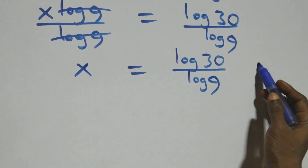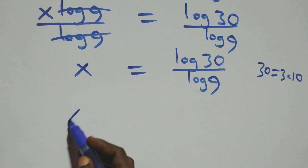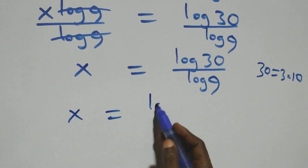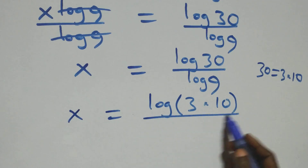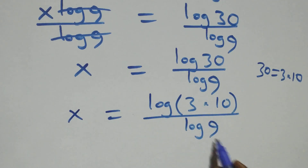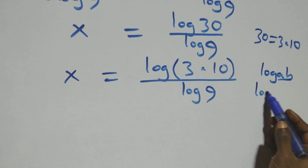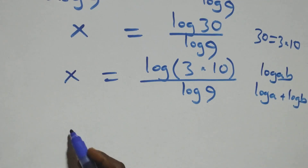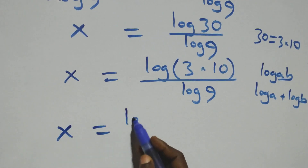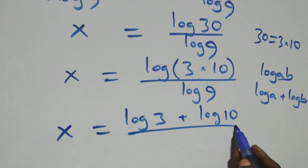Next, we can express 30 as 3 times 10, which implies x equals log(3 times 10) over log 9. Now applying the logarithm product rule — log(a times b) is the same as log a plus log b — this becomes x equals (log 3 plus log 10) over log 9.